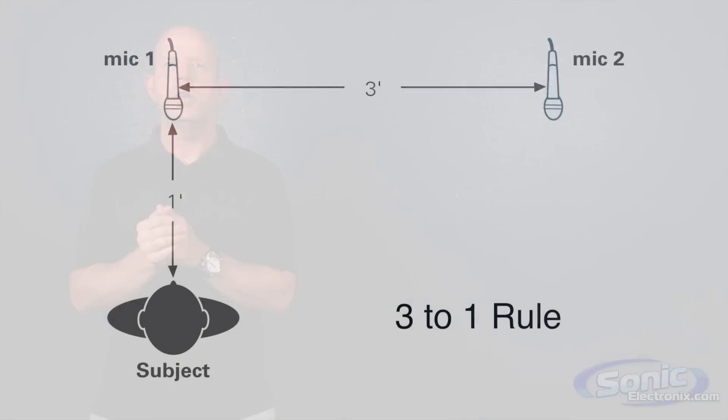Now the 3 to 1 rule is a good way to avoid phase issues when using multiple microphones. This can be with multiple individual vocalists, like maybe a backing vocal scenario, or when you're micing a choir. The rule says to take the distance to the nearest sound source and make certain that the next mic is at least 3 times that distance away.